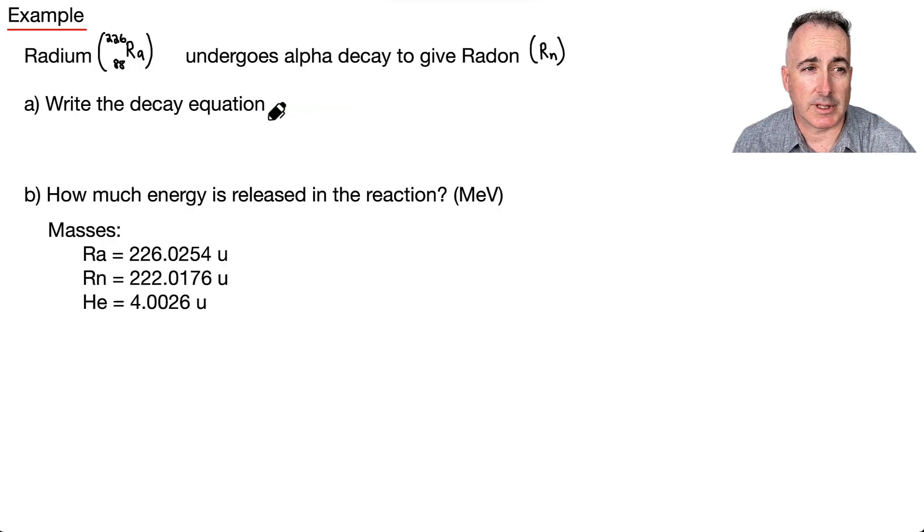So let's do an example. Let's look at radium. Remember I said before, you don't have to memorize the periodic table. You're going to be given the hints that you need. So we know that radium, for example, and we're told 226, that's the number of nucleons, 88, that's the number of protons. It undergoes alpha decay to give radon, Rn. And we're supposed to write the decay equation. You have to remember, what is an alpha? That's the one thing you had to know. You had to know that an alpha particle was a helium-4.